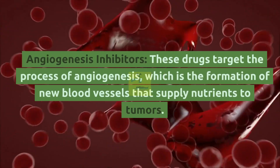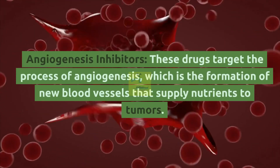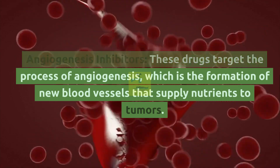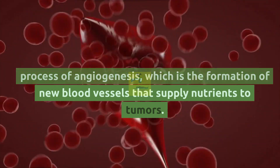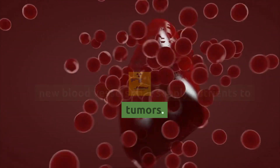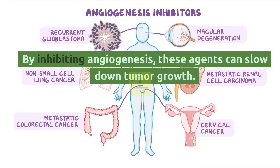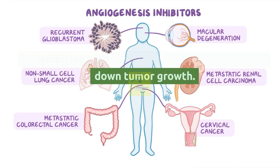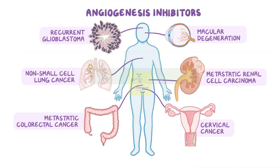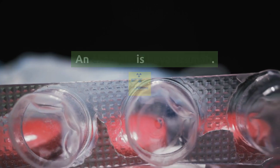Angiogenesis inhibitors: these drugs target the process of angiogenesis, which is the formation of new blood vessels that supply nutrients to tumors. By inhibiting angiogenesis, these agents can slow down tumor growth. An example is bevacizumab.